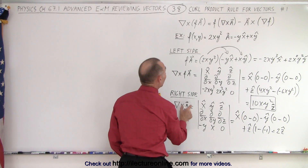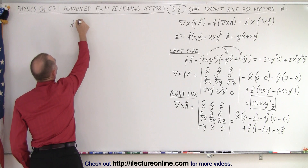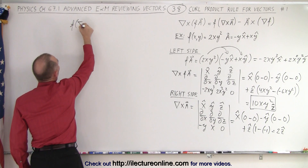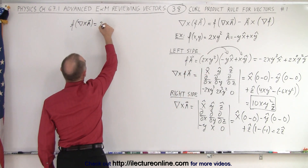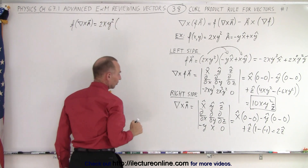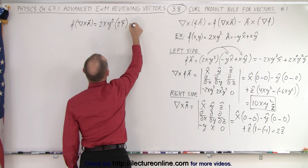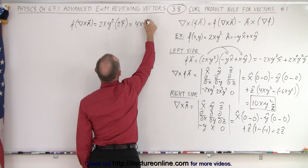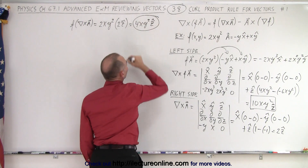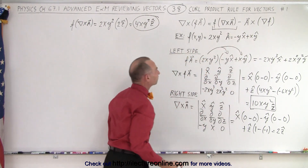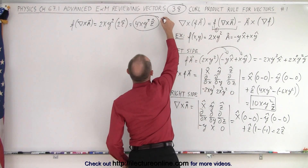Now we multiply that result by f. So f times the curl of a equals 2xy² times the curl result of 2ẑ, which equals 4xy² in the z direction. That is the first term on the right side of our equation.